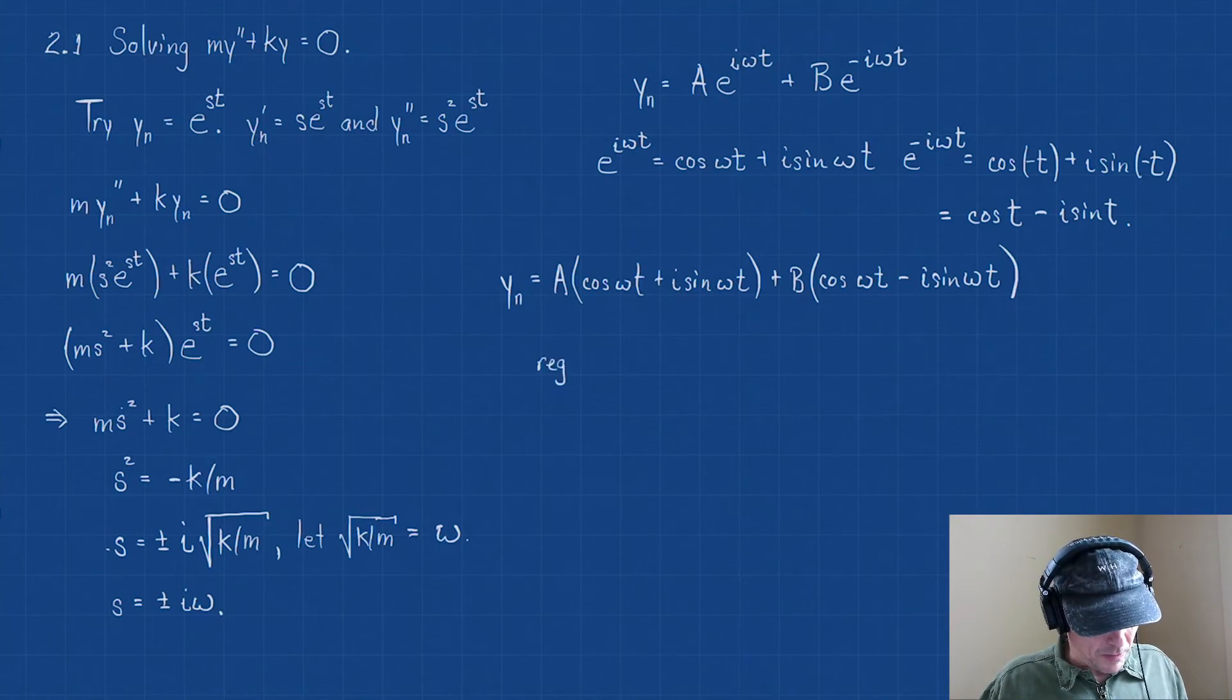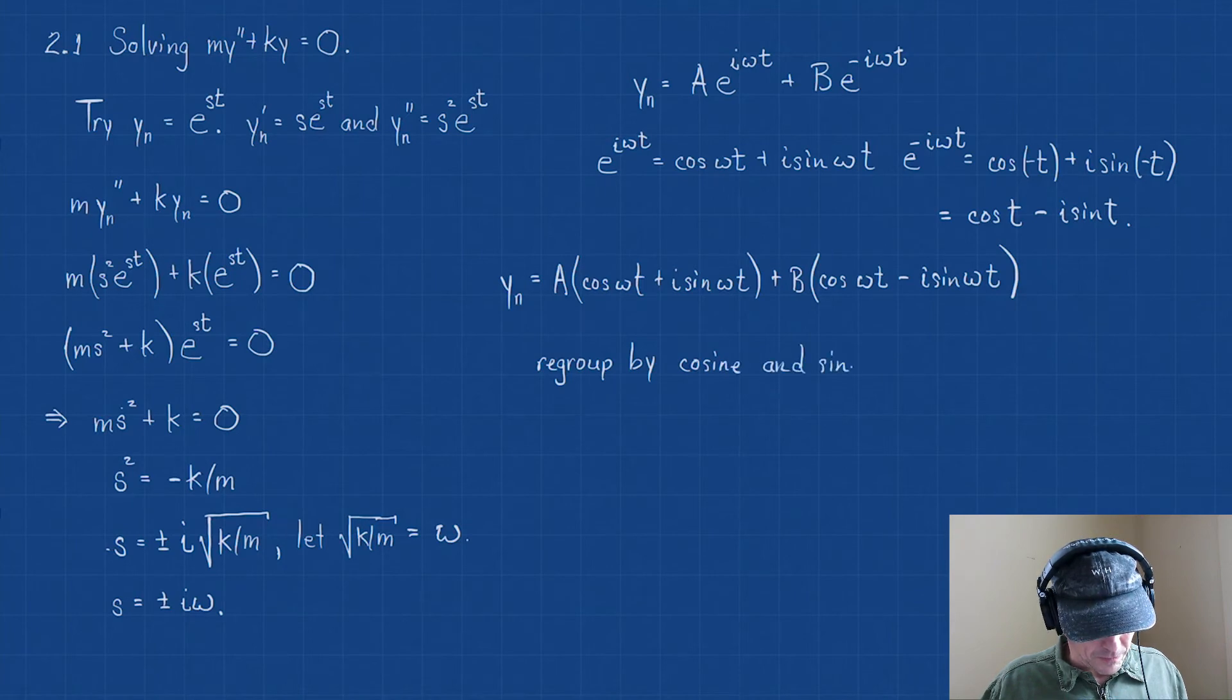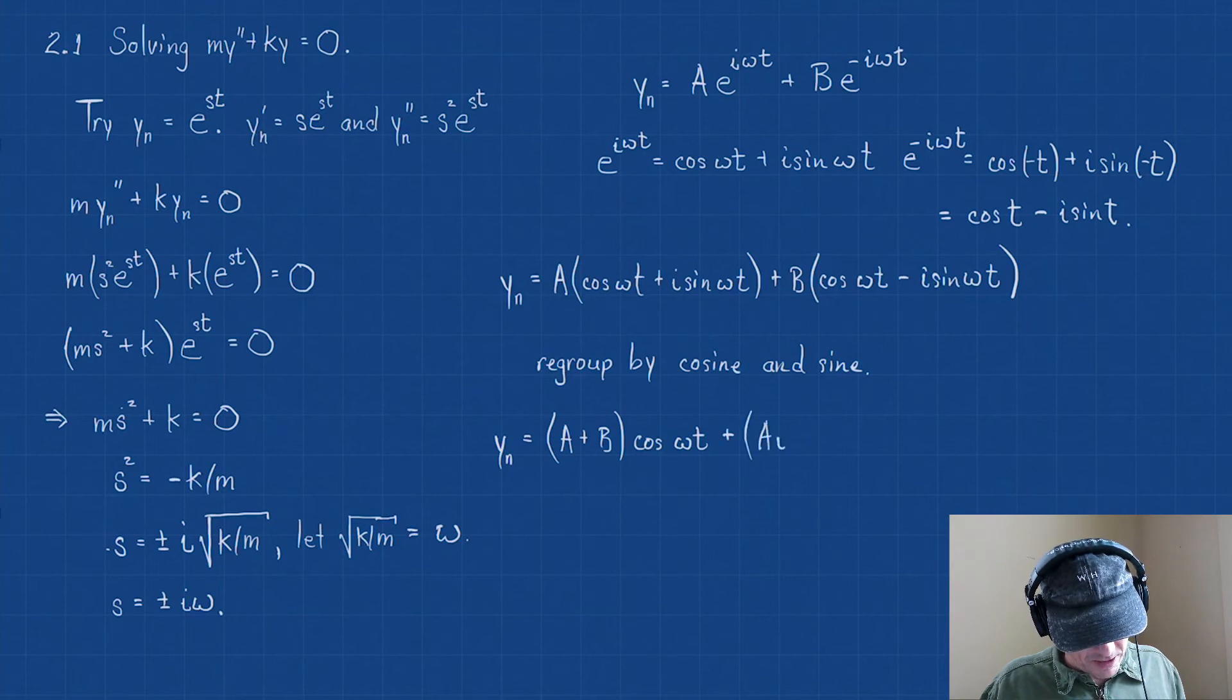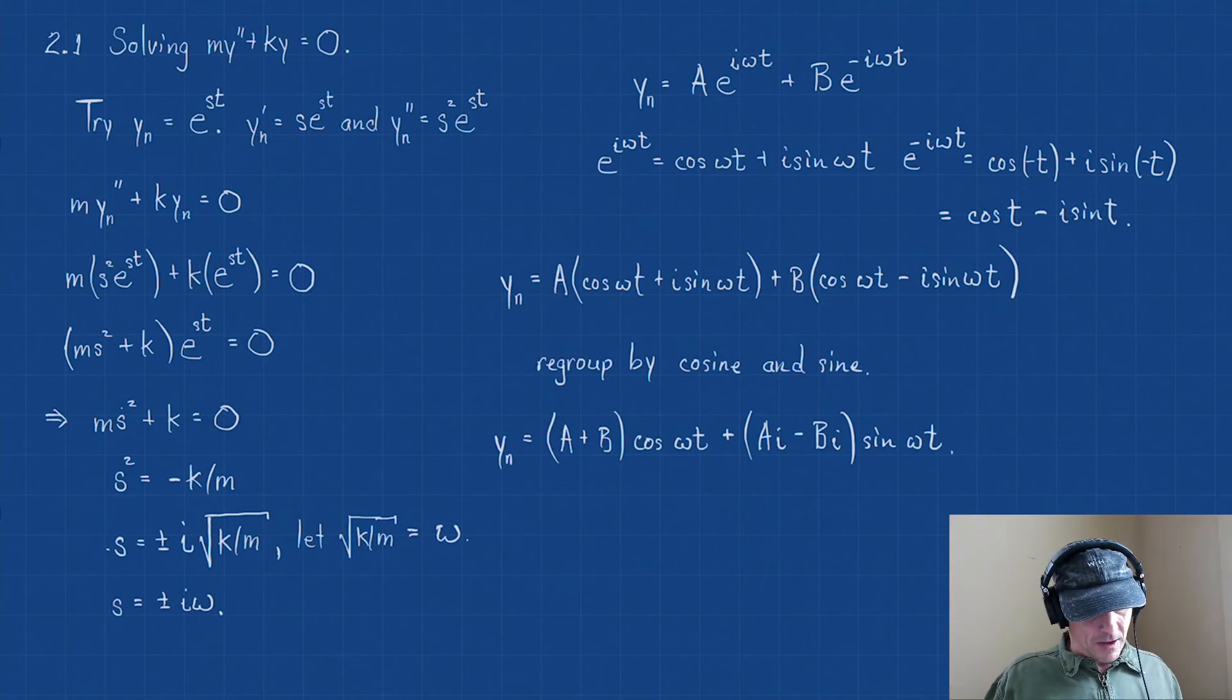Let's regroup this. Regroup by cosine and sine. So what I can say is that y_n equals, let's do it this way. If I factor out a cos(ωt), I'm going to have (a + b)·cos(ωt). And then if I factor out an i, I factor out a sine, let's just factor out the whole sine piece. Well, then I'm going to have a·i, a times i. And then I'm going to have (a - b)·i times sin(ωt).